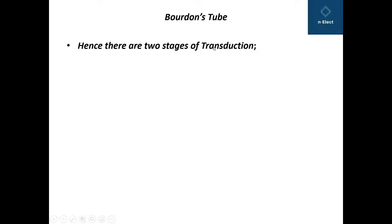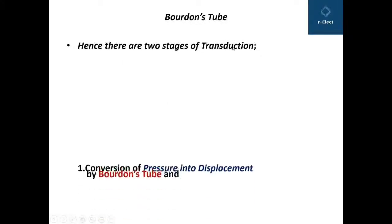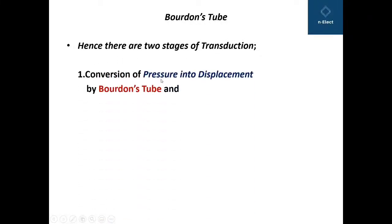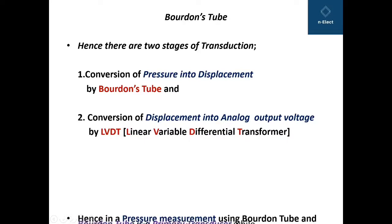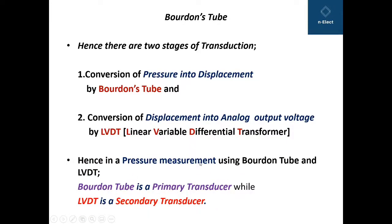Hence, there are two stages of transduction. One is conversion of pressure into displacement, which is done by the Bourdon tube, and the second is conversion of displacement into analog output voltage, which is done by the LVDT. Hence, in a pressure measurement system using a Bourdon tube and LVDT, the Bourdon tube is the primary transducer while the LVDT is the secondary transducer.